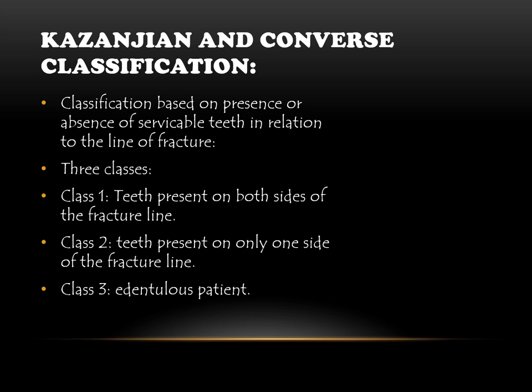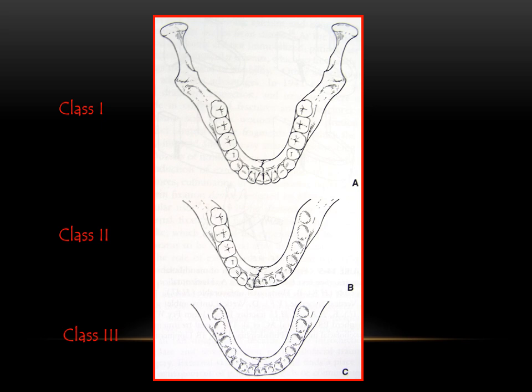The Kazanjian and Converse classification is based on the presence or absence of serviceable teeth on either side of the fracture line. Class 1: teeth are present on both sides of the fracture line. Class 2: teeth are present only on one side. Class 3: the patient is edentulous — there is absence of teeth on both sides.